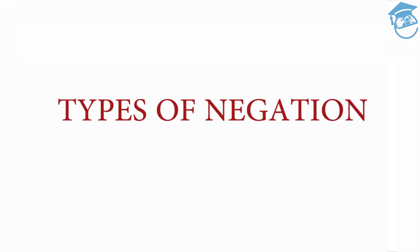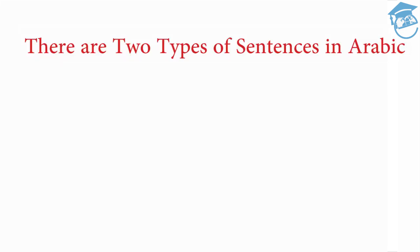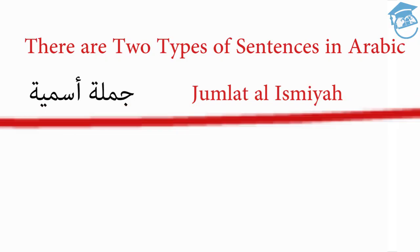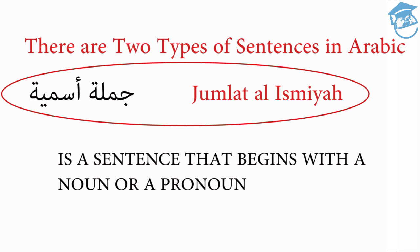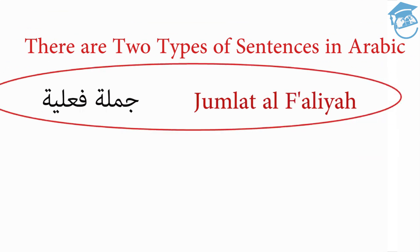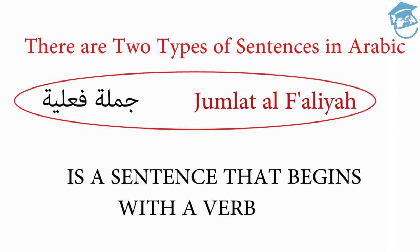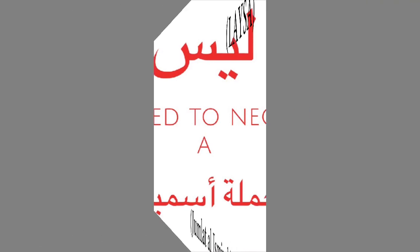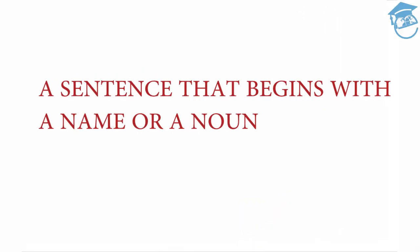The type of negation used in Arabic is dependent upon what type of sentence you're trying to negate. There are two basic types of sentences in Arabic: Jumla ismiya and jumla fa'liya. Jumla ismiya is a sentence that begins with a noun or a pronoun; jumla fa'liya is a sentence that begins with a verb. The verb leysa is used to negate a jumla ismiya — a sentence that begins with a name or a noun.